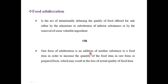We also define food adulteration as the addition of another substance to a food item in order to increase the quantity of that food item in raw or finished form, which may result in loss of the actual quality of the food item. We are increasing the quantity of our main product by adding another inferior quality substance, either in raw form or finished form.